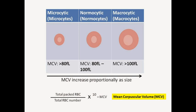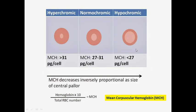According to size of erythrocytes, we divide anemias into three types: microcytic, normocytic, and macrocytic. This division depends on mean corpuscular volume (MCV). Normal MCV is 80 to 100 femtoliters. If less than 80, it is microcytic — mostly seen in iron deficiency anemia. If MCV is more than 100, this is macrocytic anemia, most characteristic of folic acid and B12 deficiency anemia.